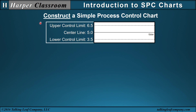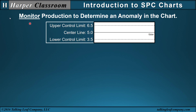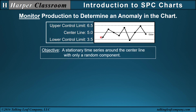Once we have constructed the simple process control chart, the next step is to monitor the production to determine an anomaly in the chart. To interpret a process control chart, the values of the quality characteristic plotted over time should represent a stationary time series around the center line with only a random component, and anything that deviates from that would constitute an anomaly.